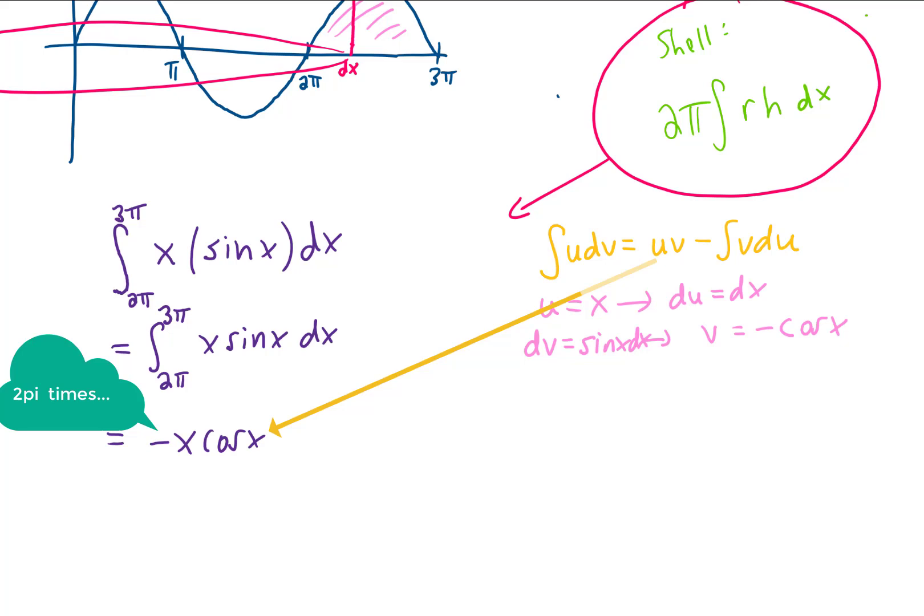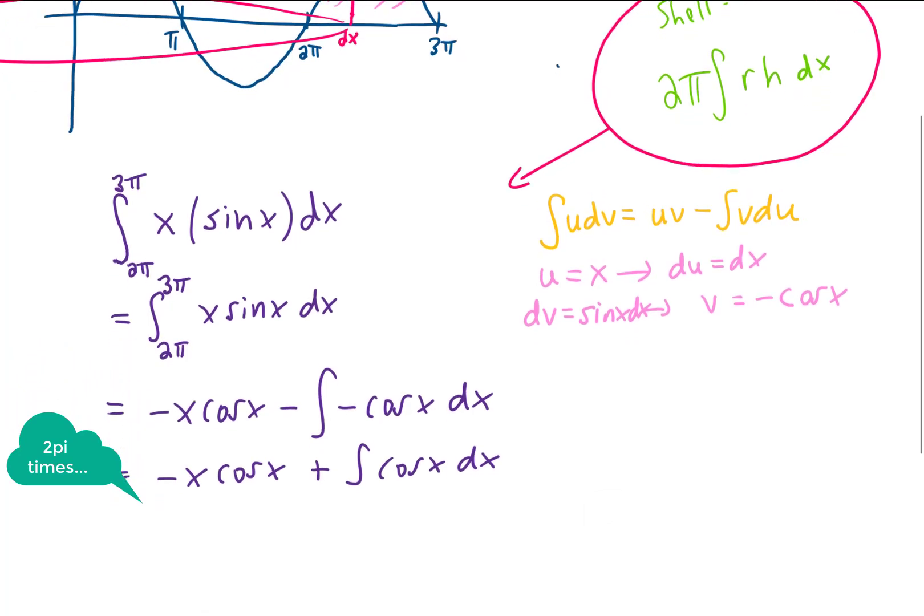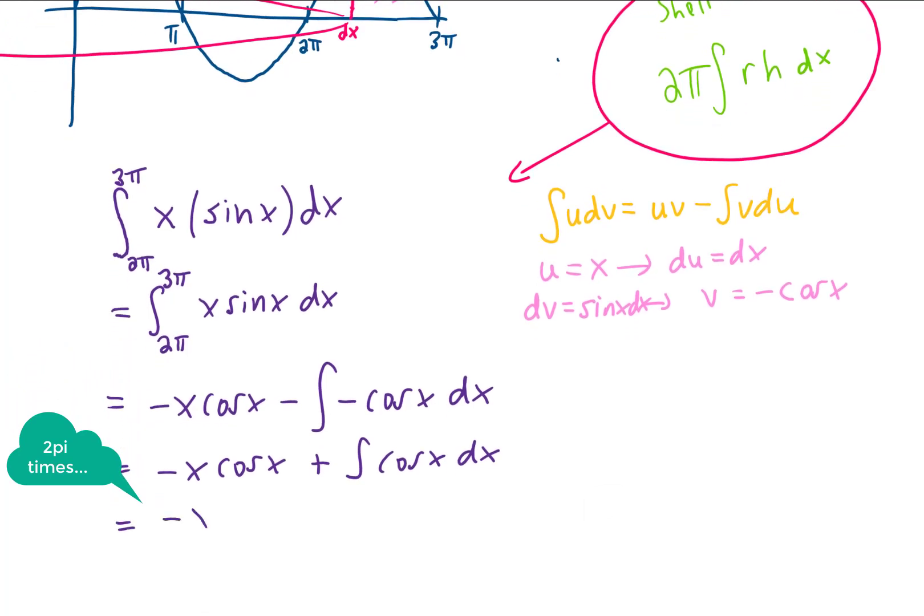uv is negative x cosine of x minus the integral of v du. Minus a negative simplifies to a plus. And the integral of cosine x is positive sine x. And I was just about to put a plus c on that when I realized that we actually do have limits of integration. We integrated from 2π to 3π.